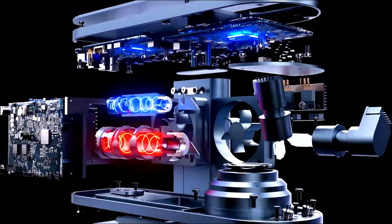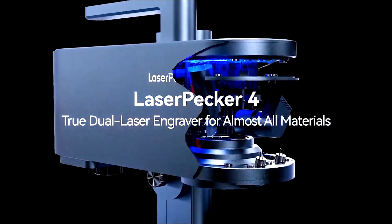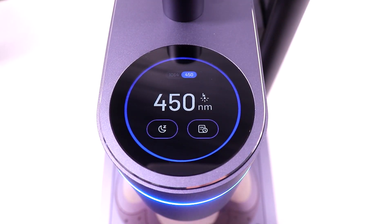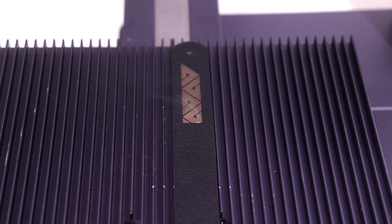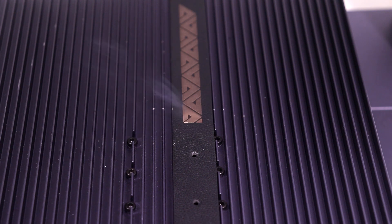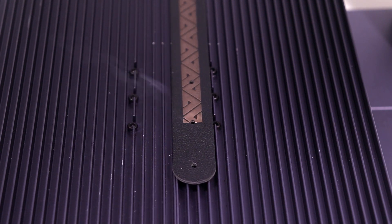The Laserpecker 4 has a dual laser source for almost all materials in one machine which can be switched using the built-in touchscreen or the app. And with this, it's very convenient cause you don't need another machine to cover the limitation of one laser machine or vice versa.